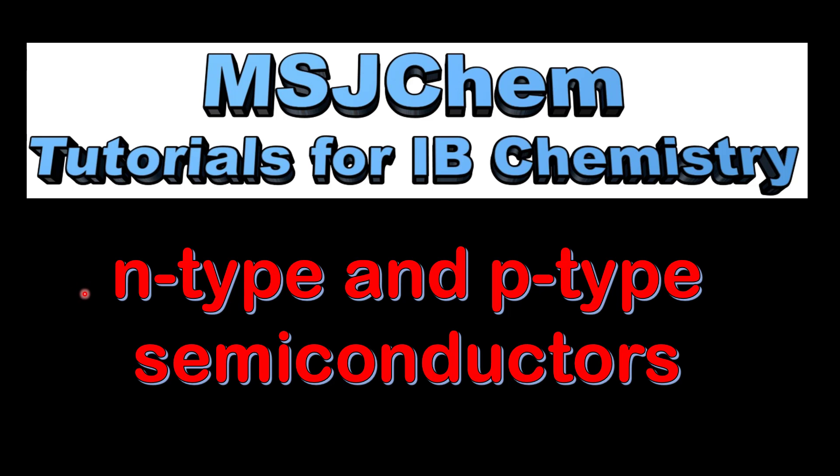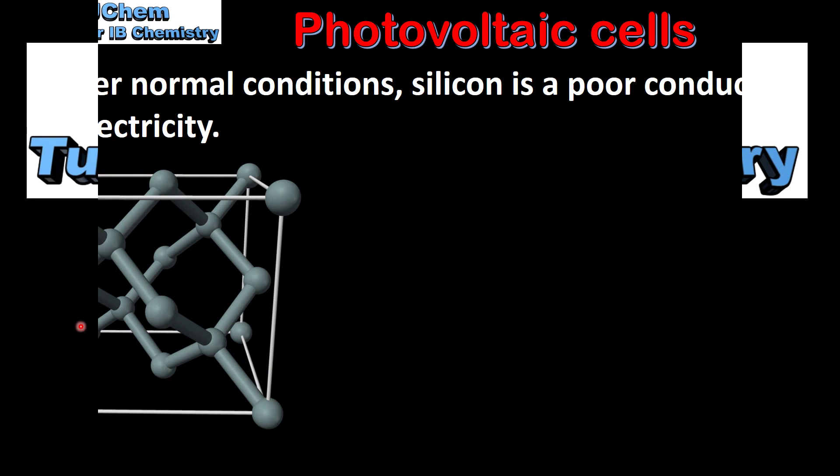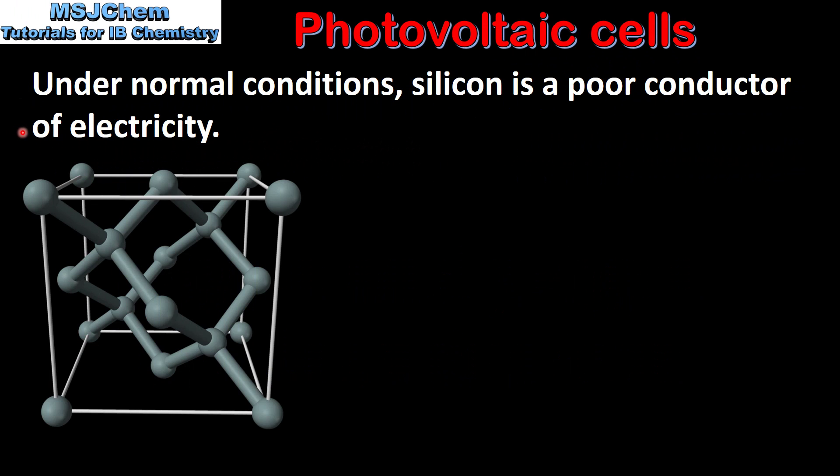This is MSJChem. In this video I'll be looking at N-type and P-type semiconductors. Under normal conditions silicon is a poor conductor of electricity.